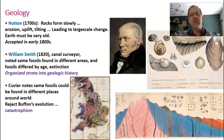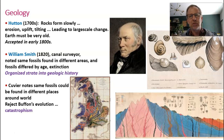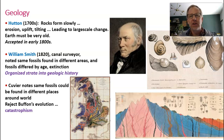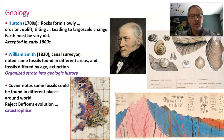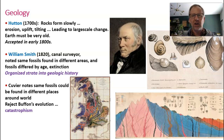Cuvier was a skeptic of evolution, noting the same fossils could be found in different places around the world. He made every last attempt to reject evolution and countered with the theory of catastrophism — which we know now is not true. The idea was that when a species in the fossil record goes extinct, new species aren't evolving to take their place; rather, species already existing in other parts of the world are moving into the area where something went extinct. Some kind of great catastrophe caused extinctions, and then species from other areas moved in and took their place.